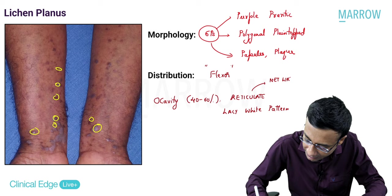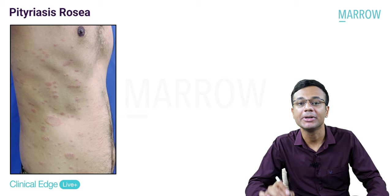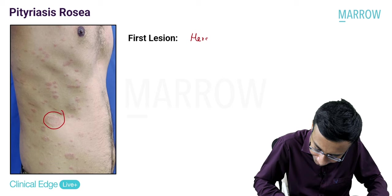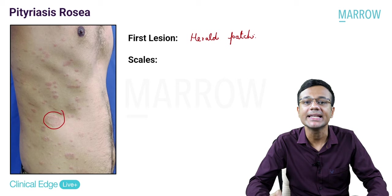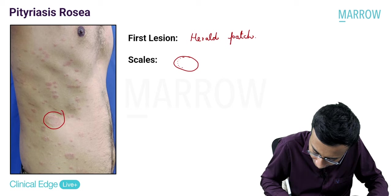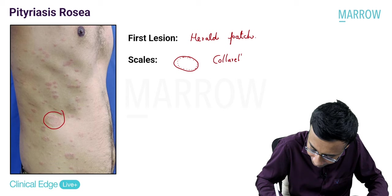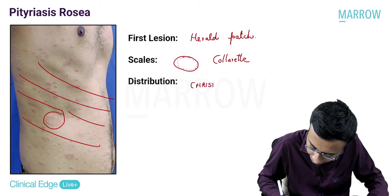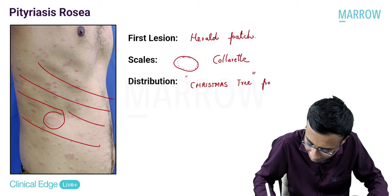The third important differential diagnosis is pityriasis rosea. The first lesion is referred to as a herald patch. The scales of pityriasis rosea are described as collarette scales - like the collar of a neck. The distribution follows the lines of Langer, referred to as a Christmas tree pattern. These will be the key points in the exam to make a diagnosis of pityriasis rosea.